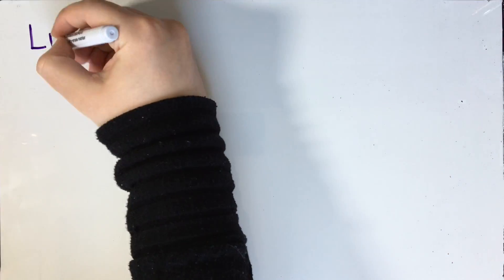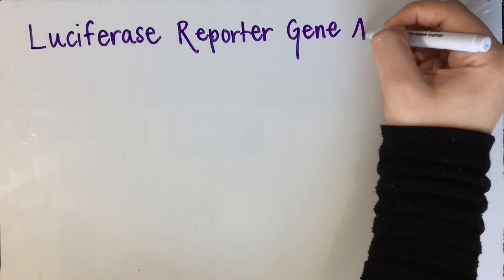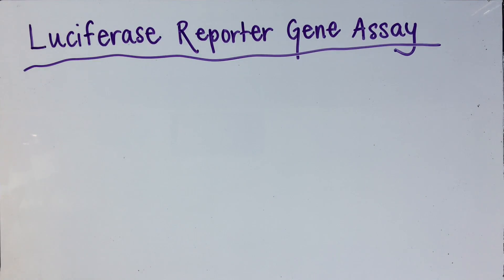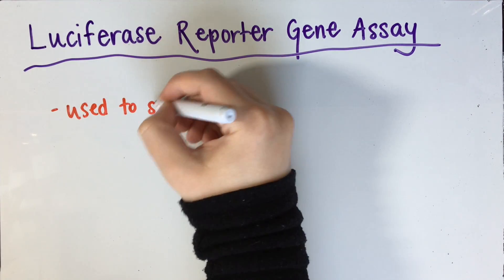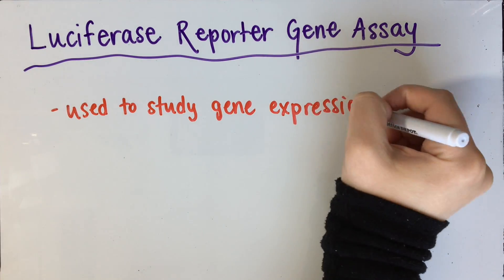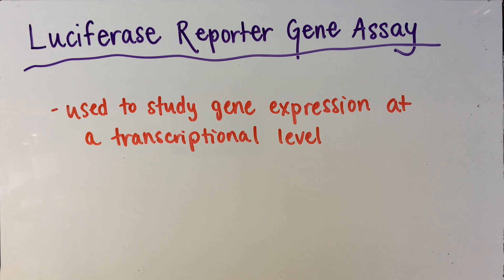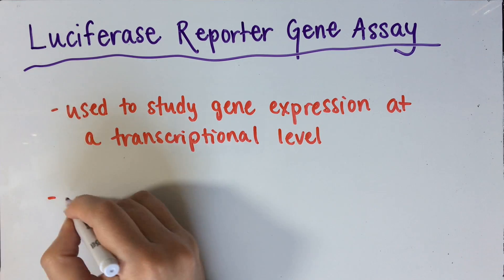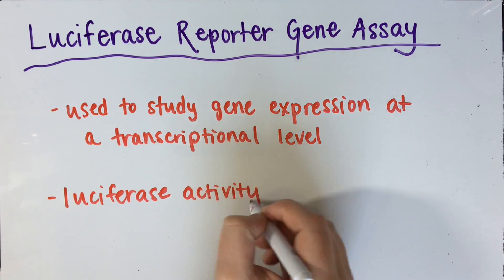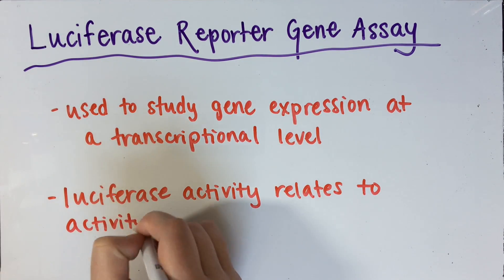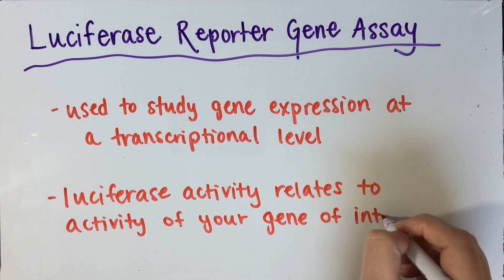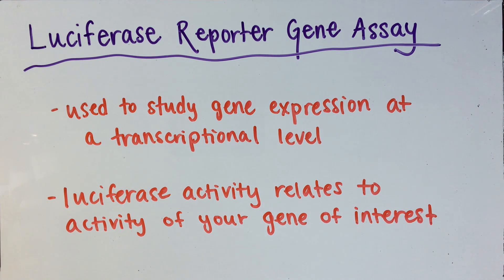Luciferase can also be used in a reporter gene assay to study the expression of genes at a transcriptional level. The gene of interest is cloned slightly upstream of the luciferase gene in a vector. The vector DNA is inserted into cells. The cells grow and are then broken open to release all of the proteins. A luminometer is used to measure light emission which directly relates to luciferase activity and the activity of your gene of interest.